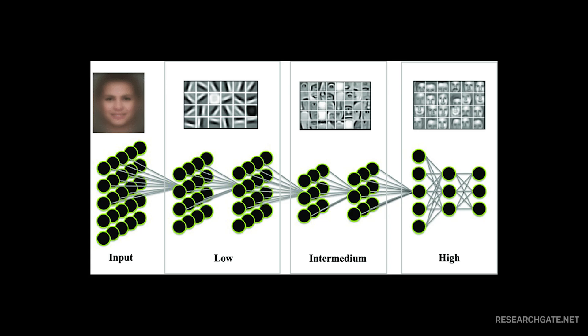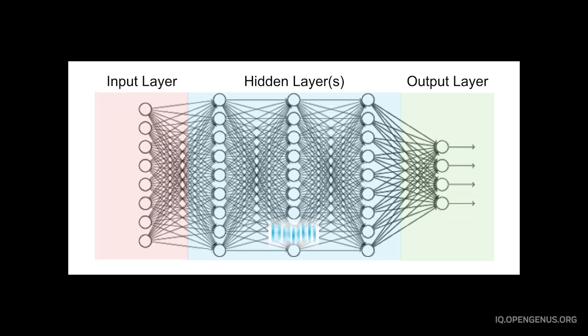Think of each layer in a neural network like an expert that specializes in detecting increasingly sophisticated features. The deep in deep learning refers to these layers. Modern networks can have hundreds of them.